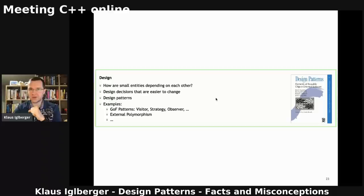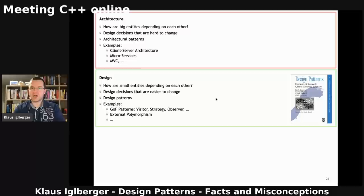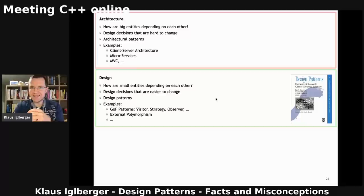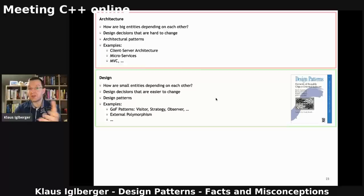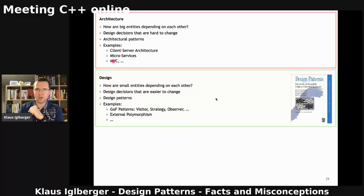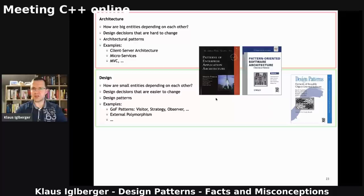Above design is architecture — about the big things: connections between bigger things like modules or larger components. Usually that is the stuff that is much harder to change because it's the big decisions that everything else builds on. In this realm we usually talk about architectural patterns: client-server architecture, microservices, model-view-controller, and similar ones. There are books that talk about these — Martin Fowler's book gives both architectural and a couple of design patterns.